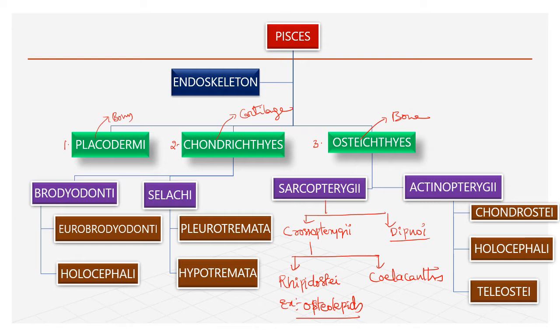Actinopterygii is divided into three orders: Chondrostei, Holostei, and Teleostei. Sarcopterygii and Actinopterygii are divided based on the type of fins. Osteichthyes is divided into two subclasses based on the type of fins.